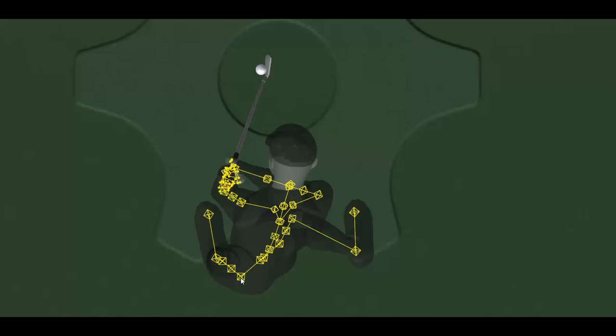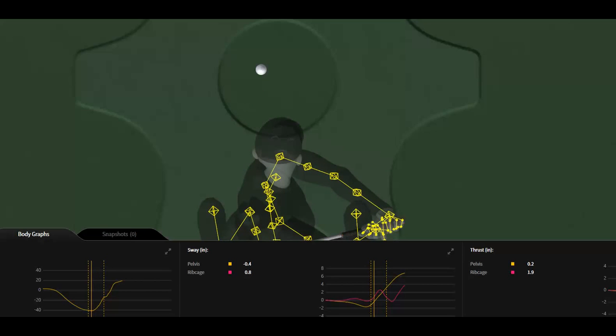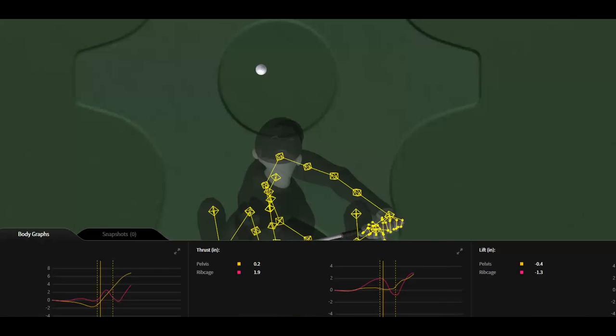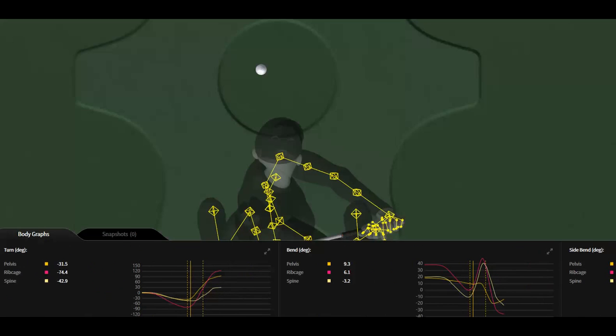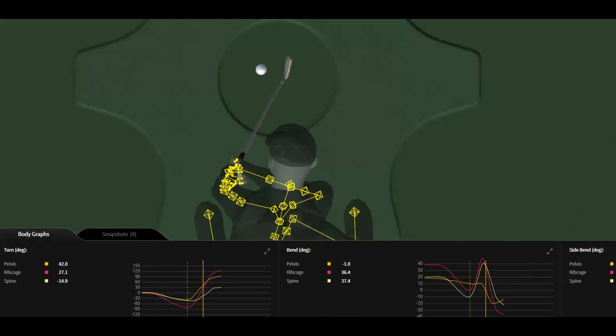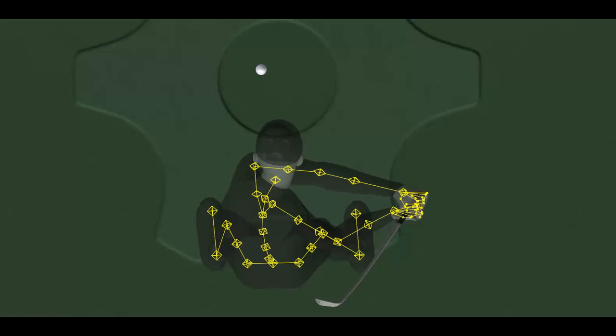Let's see if we can find it here—pelvis rotation graph. Let's take a look. At impact he's rotated open 42 degrees at this point, so pretty standard, common number that would fall in the range of PGA Tour.